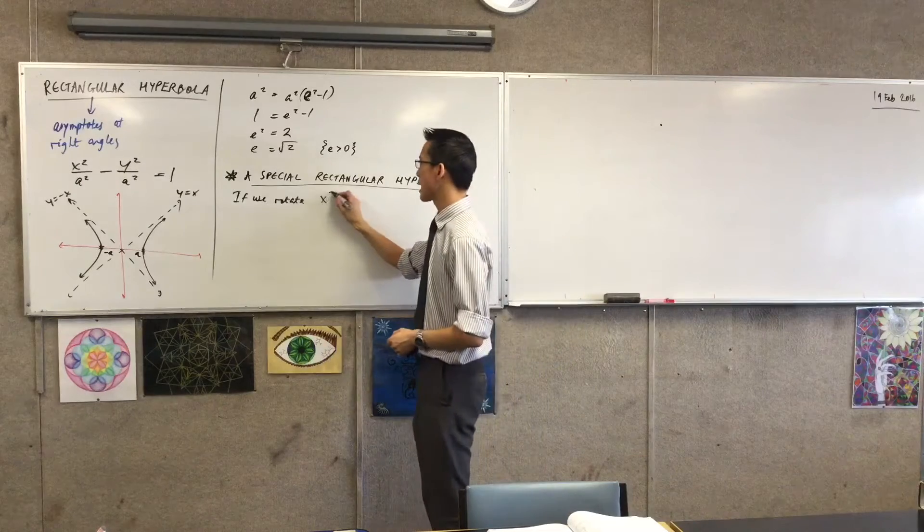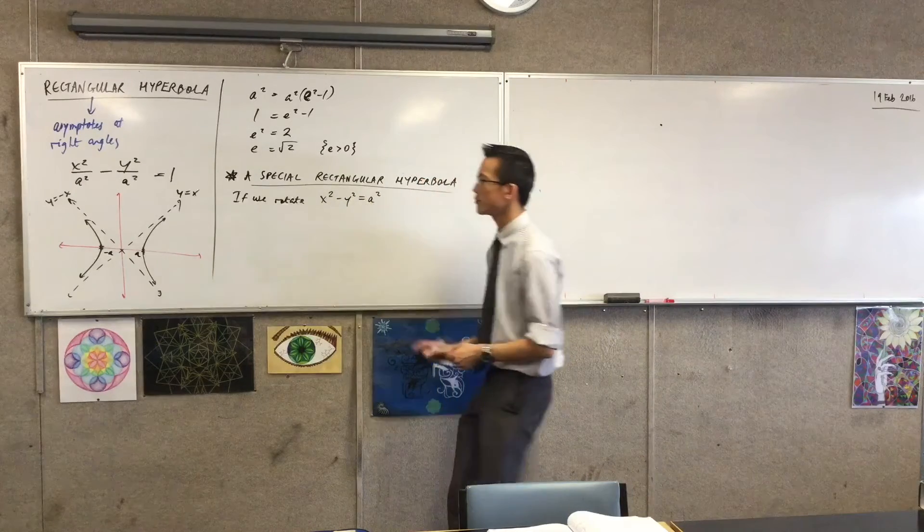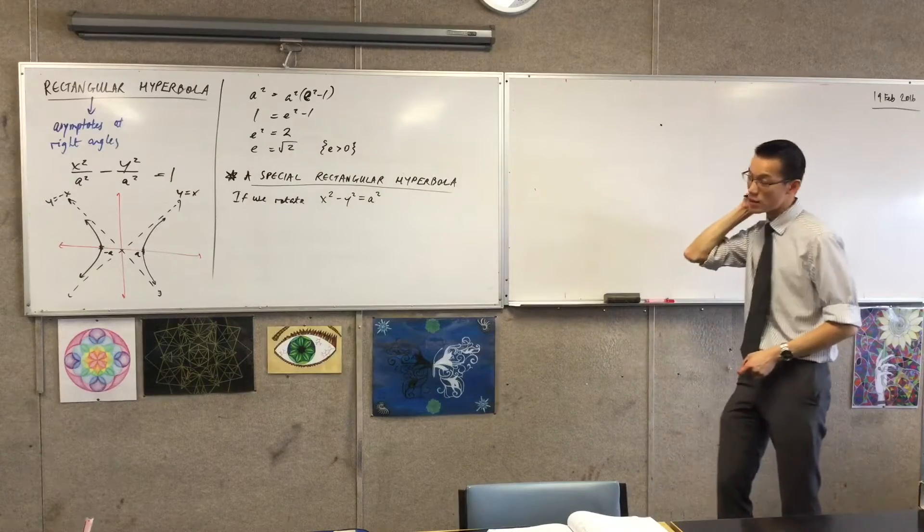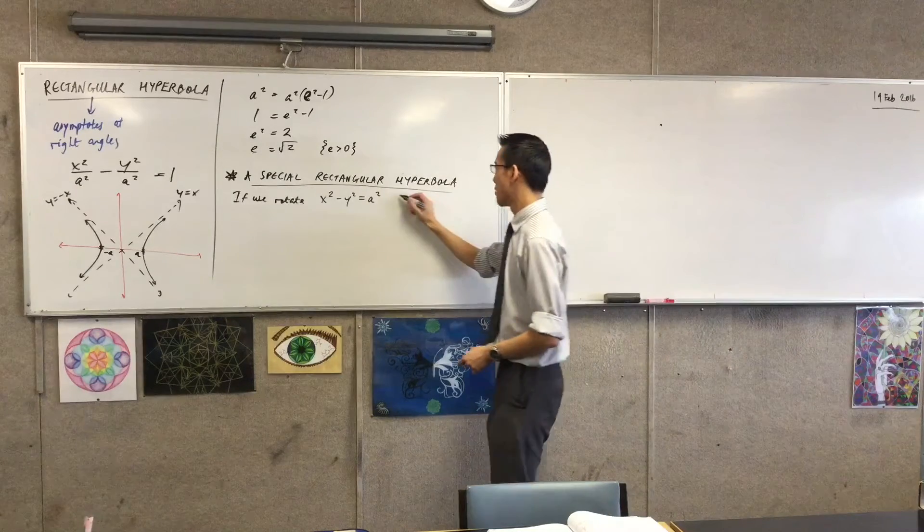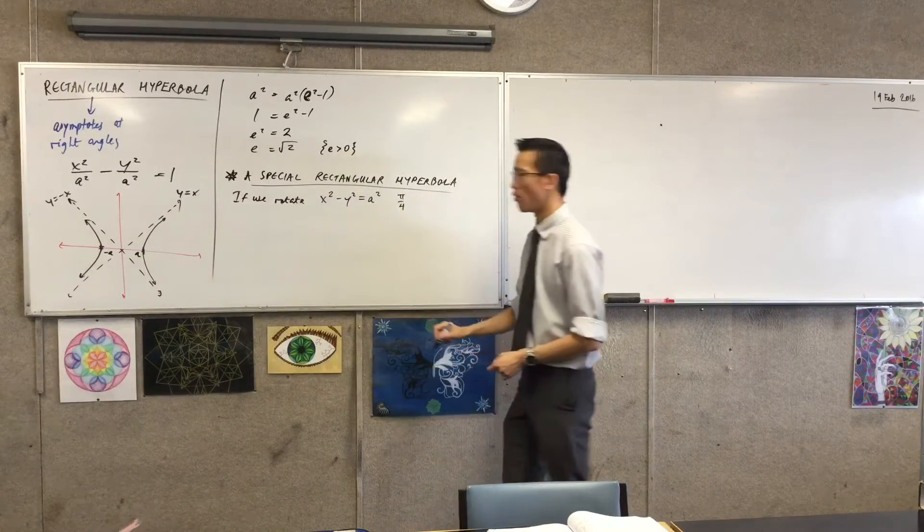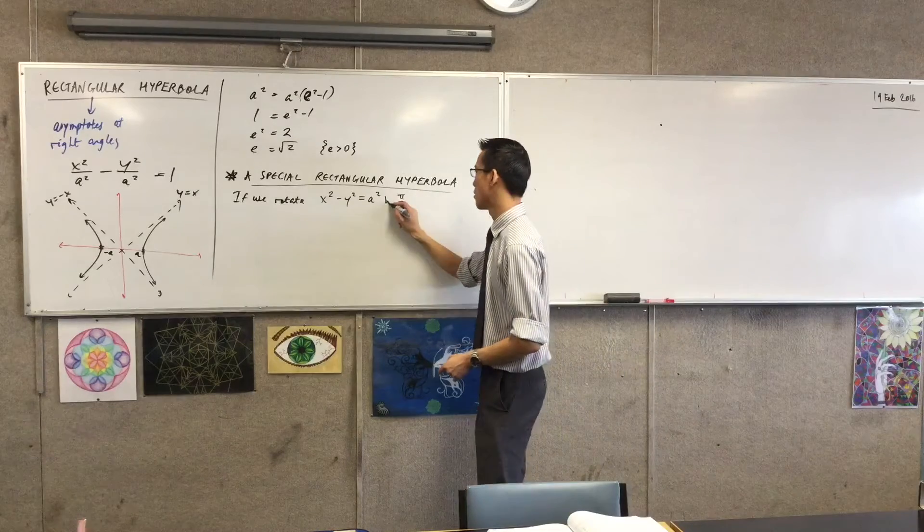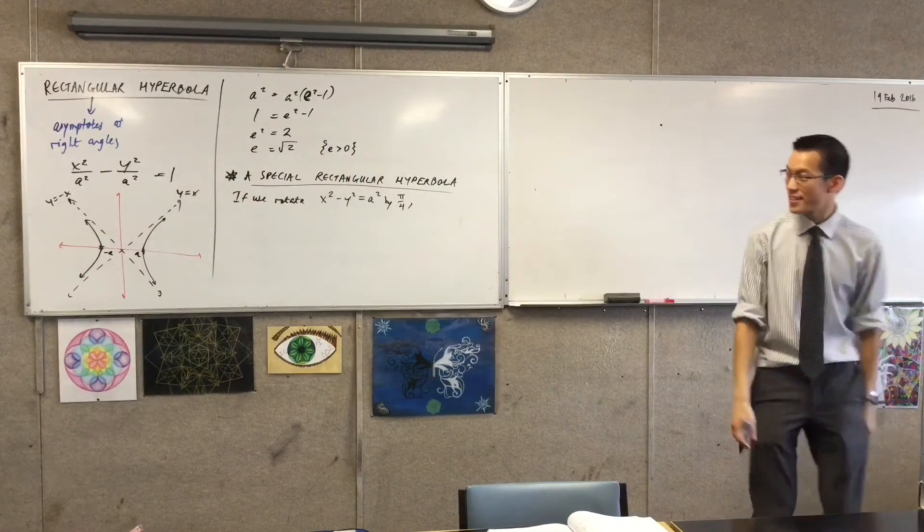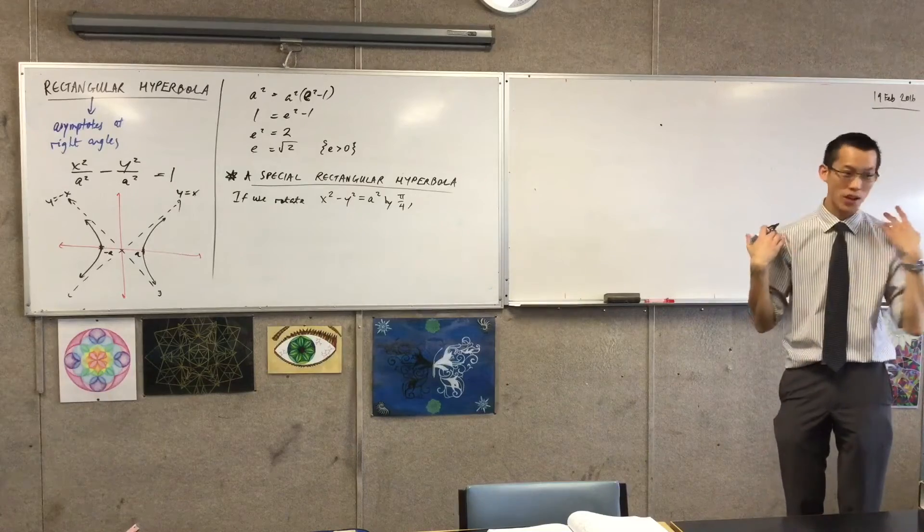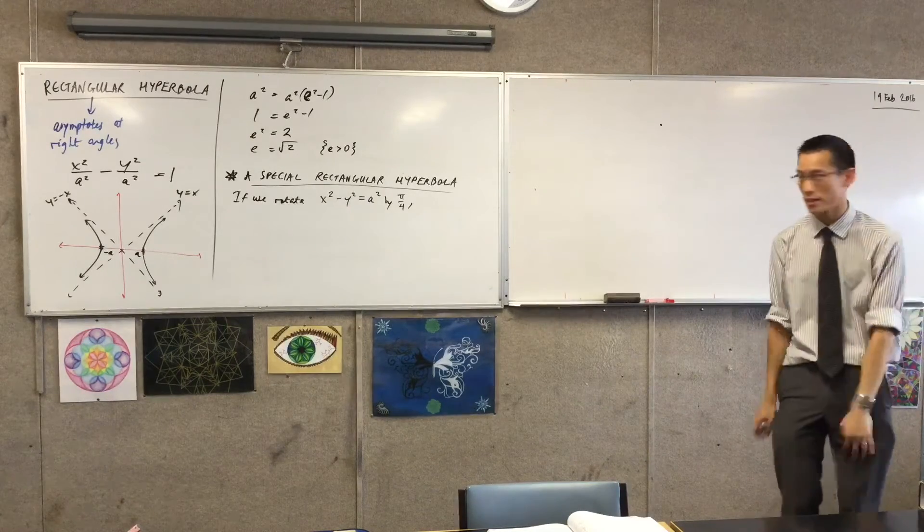So if we rotate this hyperbola, if we rotate x squared minus y squared equals a squared by pi on 4, we will get the familiar hyperbola that we've actually been working with for years before we touched conics at all.